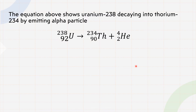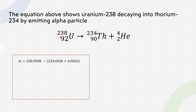So how do we solve this question? First we must find the mass defect. Mass defect m equals the total mass before the reaction minus the total mass after the reaction. In this question it is the mass of uranium minus the mass of thorium plus the alpha particle. We put in the values and get 5.6 times 10 to the power of negative 3 atomic mass units.